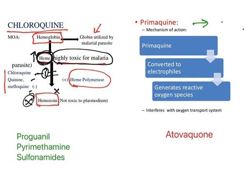Primaquine is tissue-specific. It is converted into electrophiles that generate reactive oxygen species (ROS). These reactive oxygen species affect the oxygen transport of the malarial parasite and cause its death. This is the mechanism of action of primaquine.